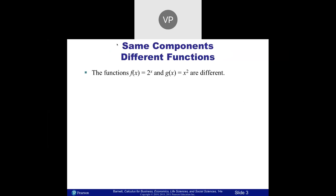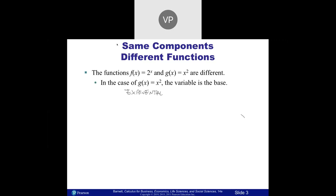For example, g of x equals x squared has an exponent, but the variable is the base — it's this two that's the power. That's normal, that's what we've been dealing with. The one on the left is the exponential. The main key is the variable x is up in the power — that's what we're talking about.